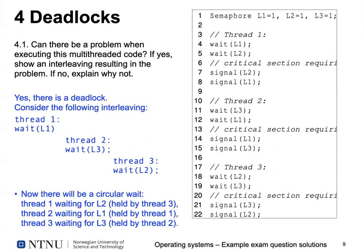The question was: can there be a problem when executing this multi-threaded code, and if so, show an interleaving that results in the problem. Consider: thread one locks L1, then after a thread switch, thread two locks L3, then thread three locks L2. Switching back to thread one, it waits for L2 but can't get it because thread three has it. Thread two waits for L1 but that's locked by thread one. Thread three waits for L3 but that's held by thread two. This gives us the circular wait condition.